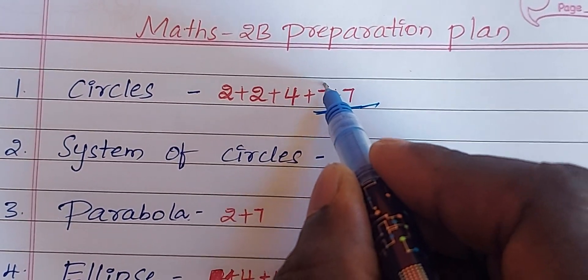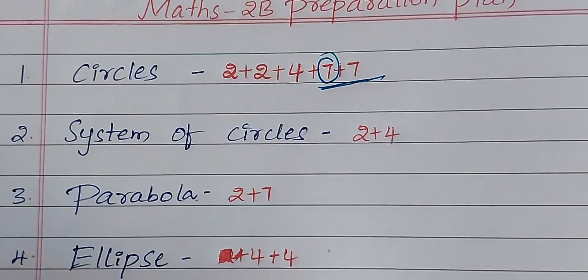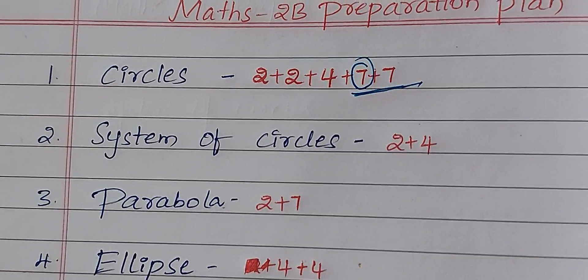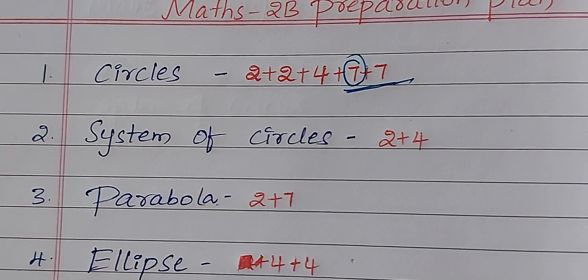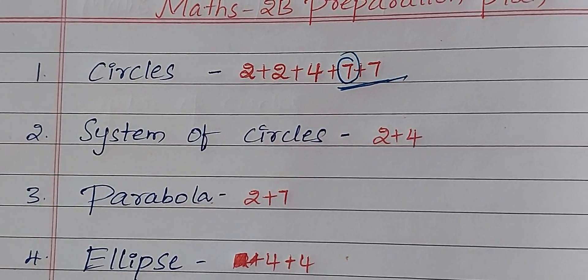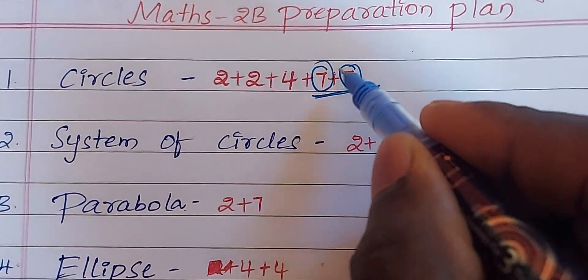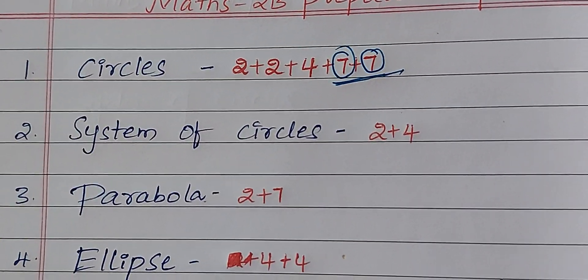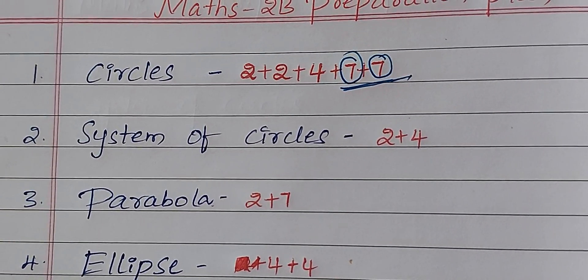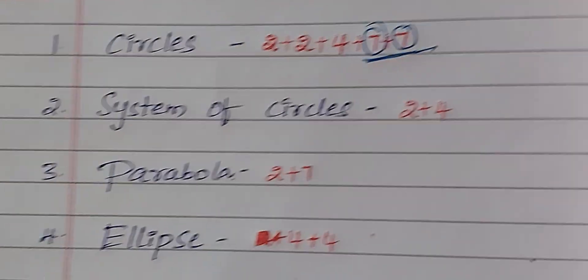First question: Circle through 3 points. If a point is given, find the value of C. Centre lies on the line — that question is compulsory. Confirm. Next, 7-mark questions from the last exercise: Direct common tangents, Transverse common tangents, Circles touch each other internally, Circles touch each other externally. So these 4 questions are compulsory.